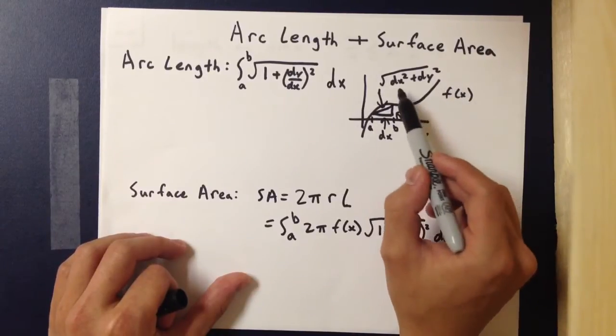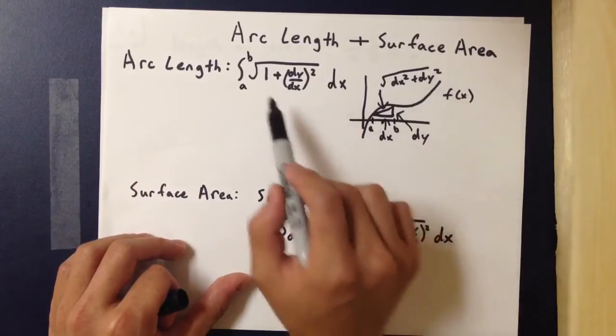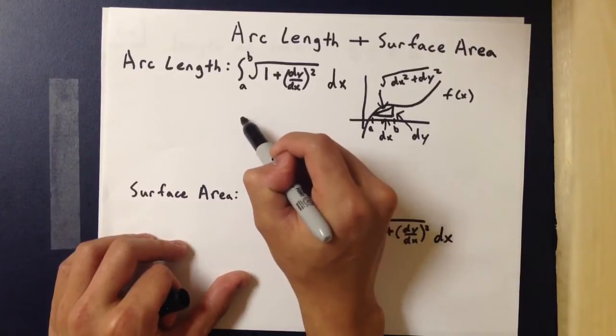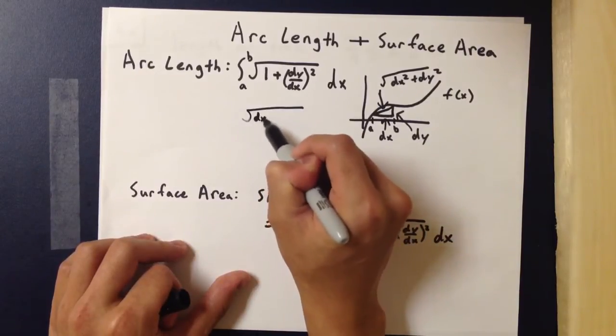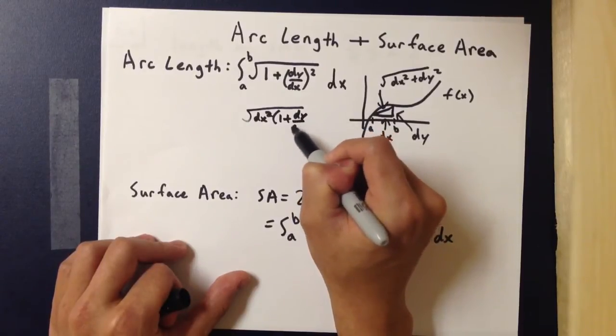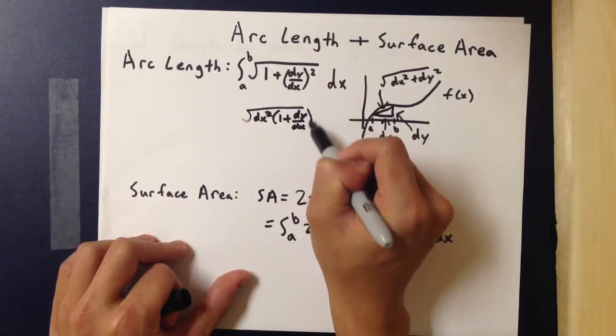So how does the square root of dx² plus dy² turn into this? Well, if you were to factor out a dx² term, it would be dx² times (1 plus (dy/dx)²).